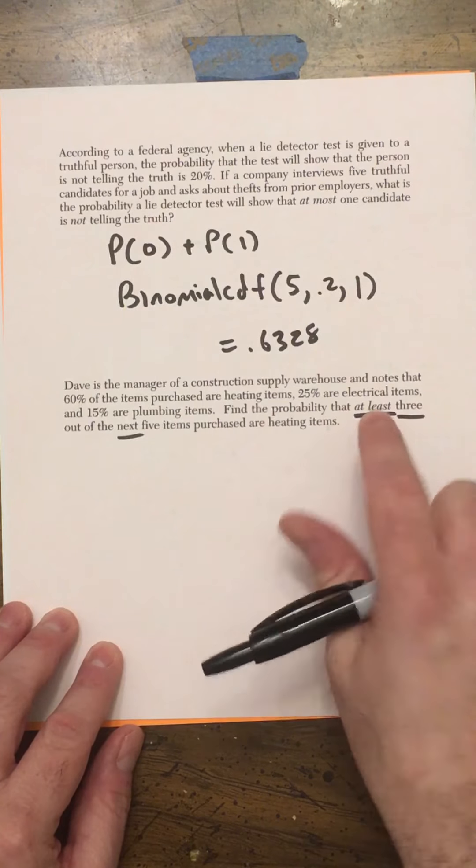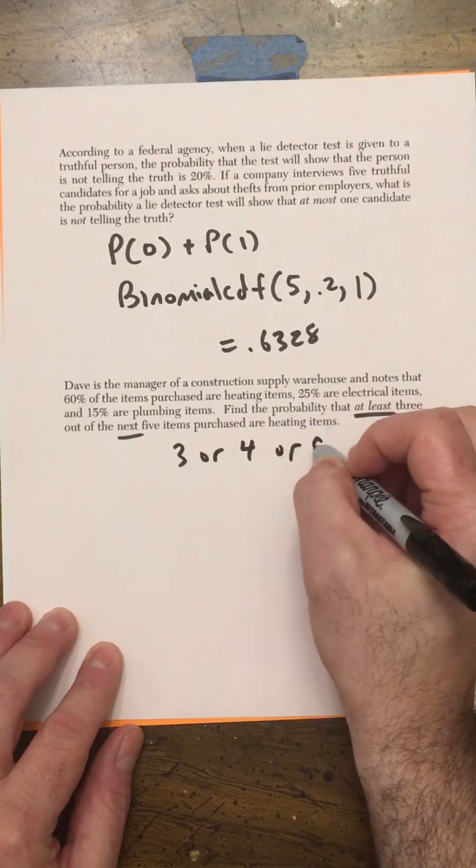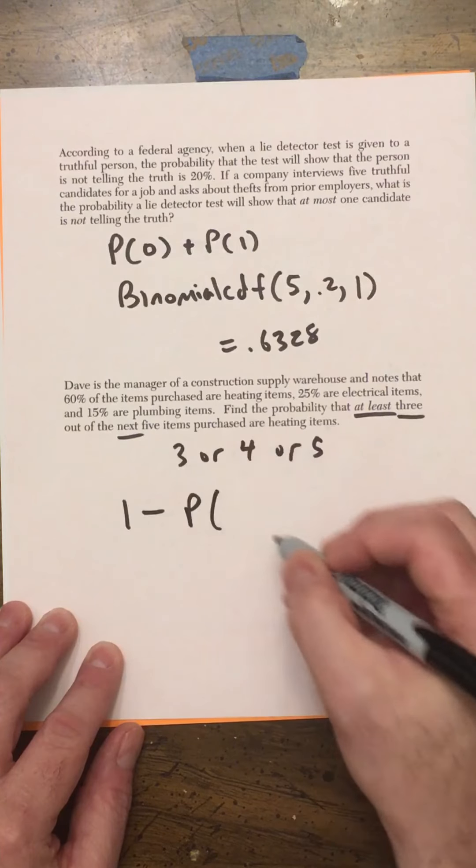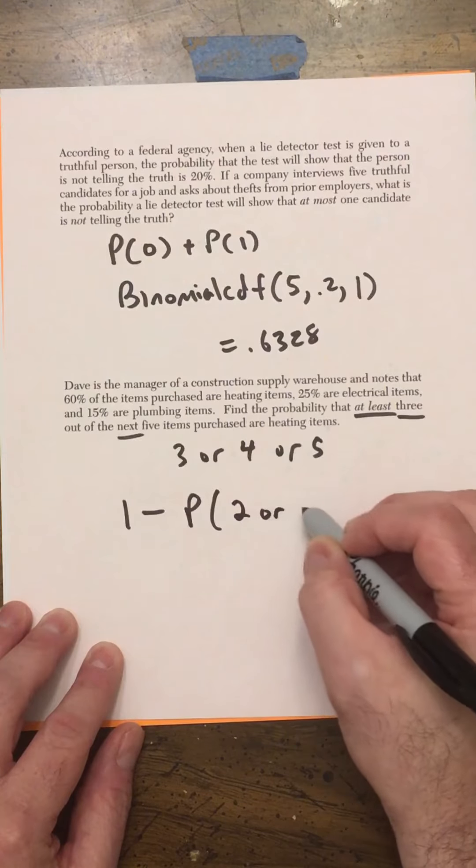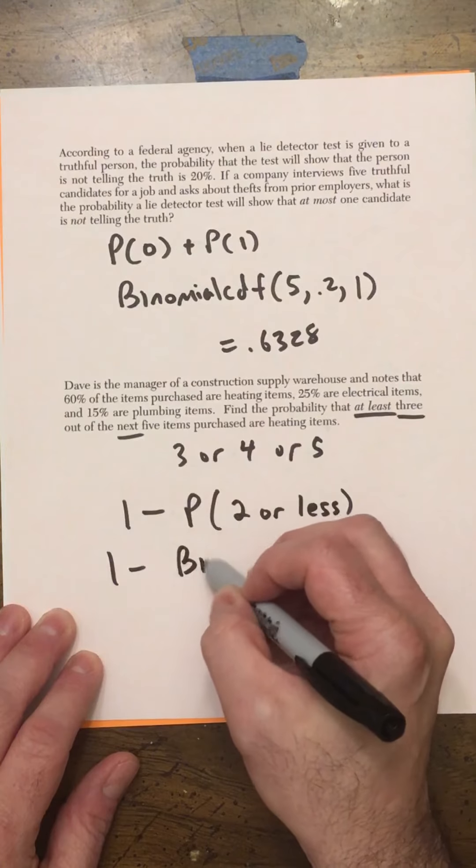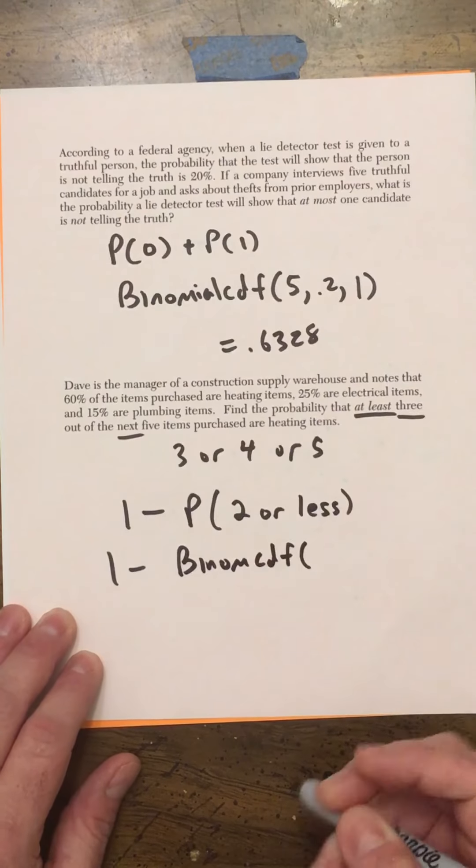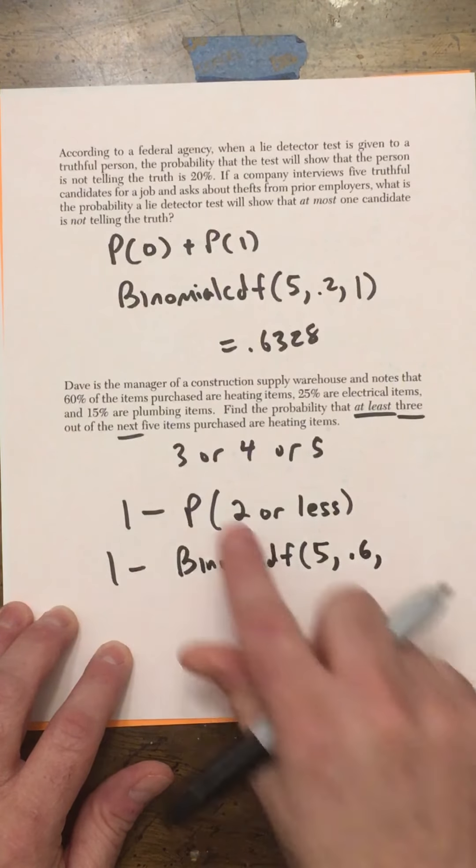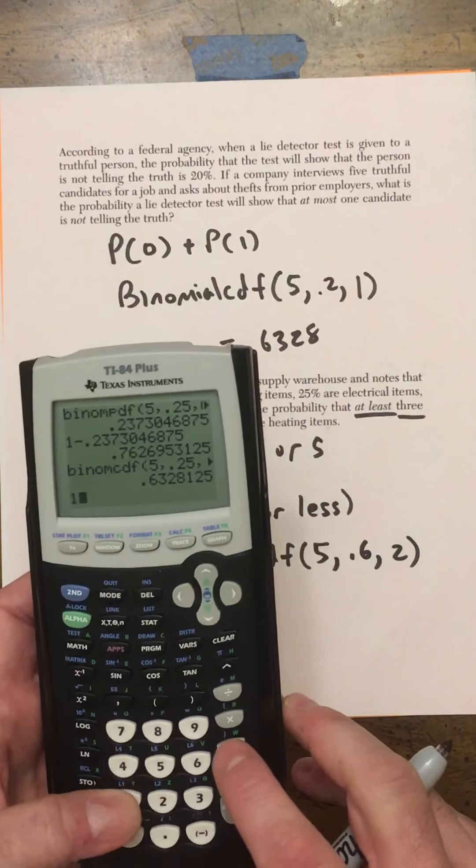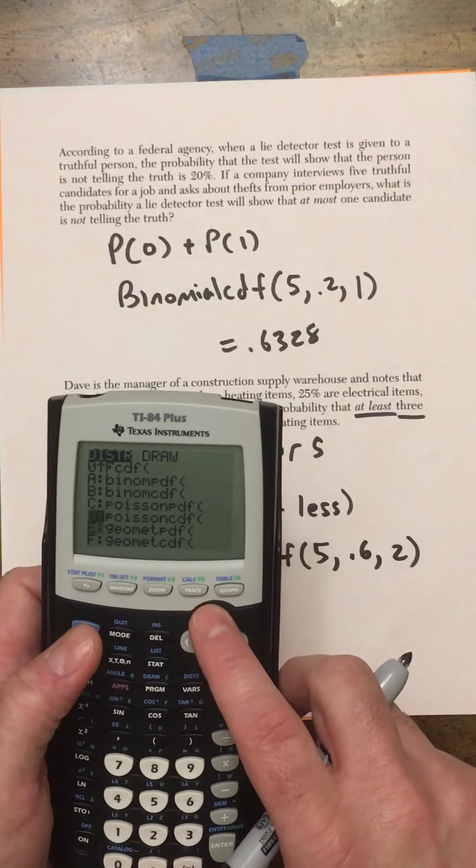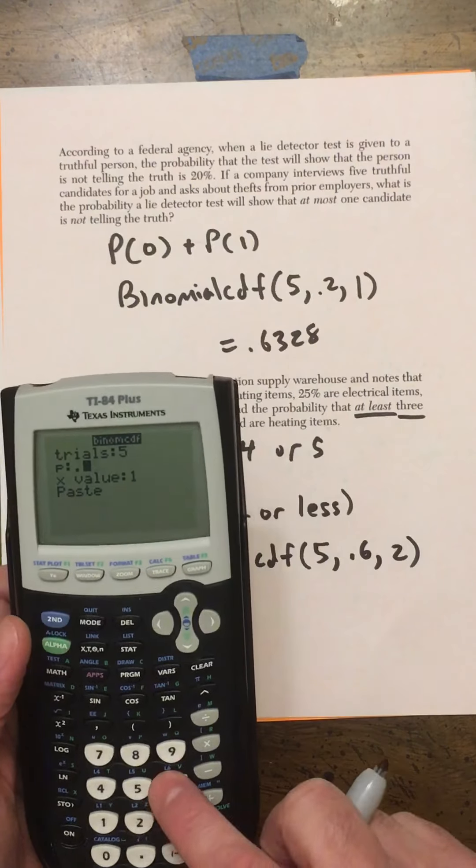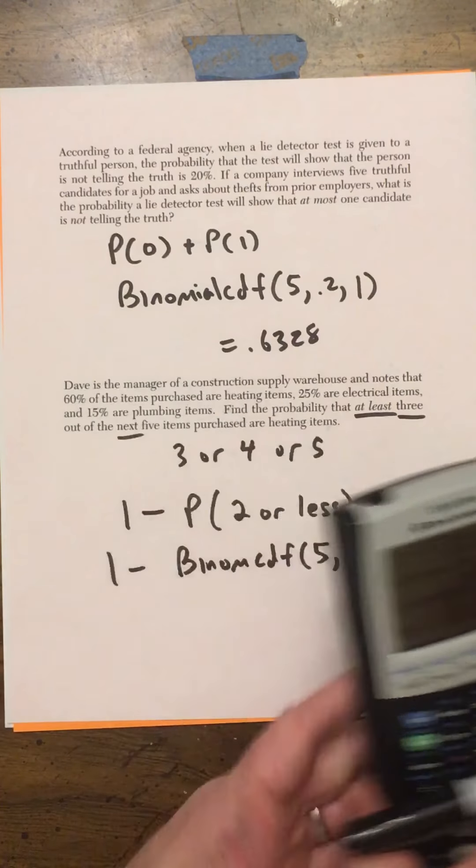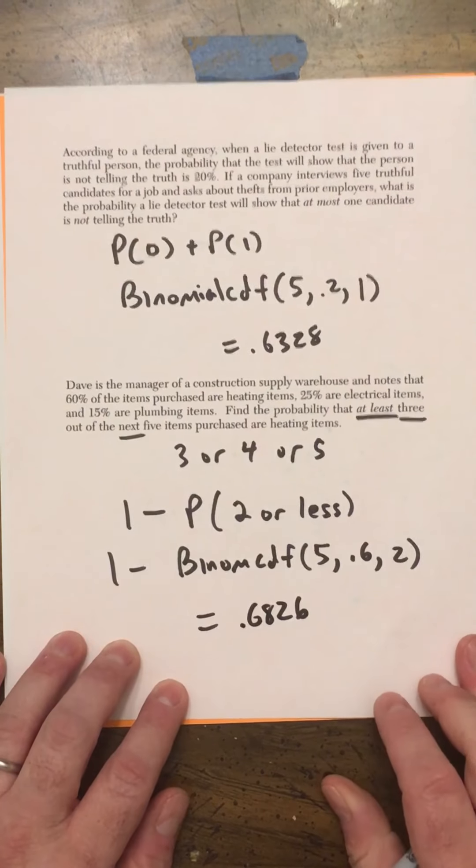So we want at least three. So at least three would be three or four or five. So we have to do the probability of three plus the probability of four plus the probability of five. Or another way of doing it is doing one minus the binomial probability two or less. So we would do one minus binomial CDF. We have a total of five things we're picking, five items that we're picking. The probability that it's a heating item is 0.6, and two or less will be two. So one minus, and then we'll go to the binomial CDF. We're doing five trials, 0.6, and the x value is two. Let's see what that turns out to be. 0.6826. So that's how you do that at least or at most.